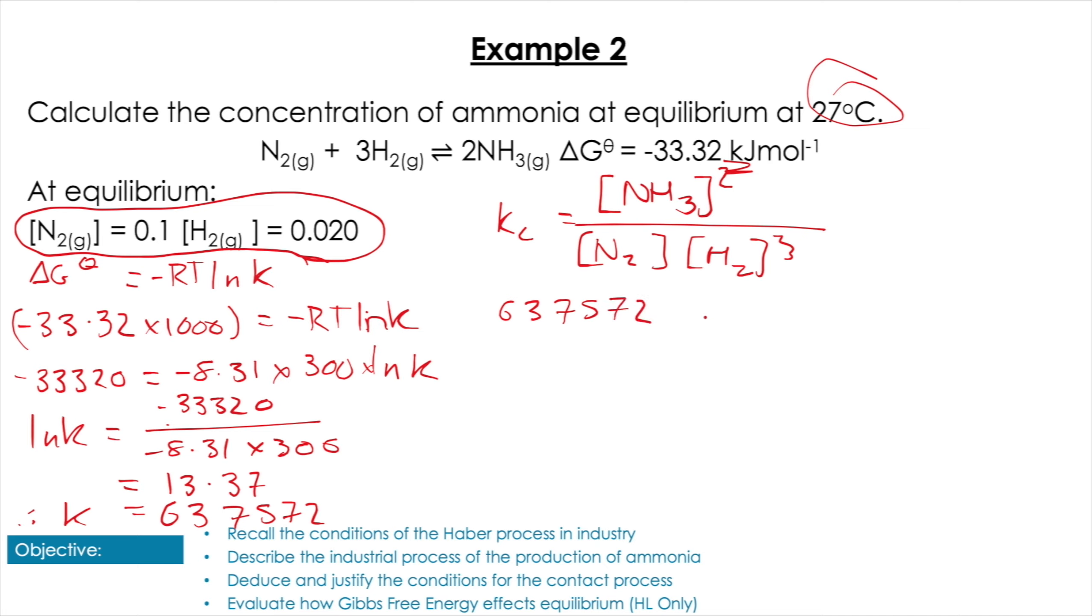So I plug in my value for Kc, and I do [NH3]² / (0.1 × 0.02³). And then I'm just going to rearrange all of that to get NH3 by itself.